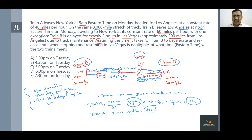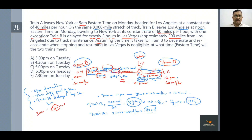Train B restarts at 5:20 PM, and both trains are again moving in opposite directions. The total distance already covered is: 120 miles (Train A before noon) + 133⅓ miles (Train A during Train B's run to Vegas) + 80 miles (Train A during delay) + 200 miles (Train B to Vegas) = 533⅓ miles. Out of 3000 miles, that leaves approximately 2466⅔ miles yet to be covered by both trains together.